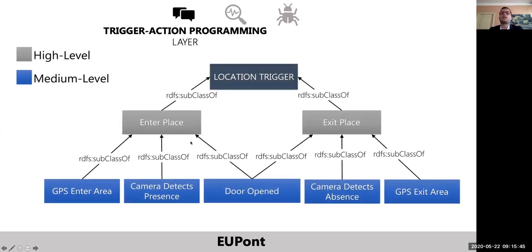Rules in EUPont can be defined at two different levels of abstraction: high and medium. The graph shows some location triggers. High-level triggers are generic events to be verified, like entering a place, and they don't include any technical detail nor the connected entity to be used — these events could potentially be monitored in different ways, through a camera, the smartphone, GPS, and so on. Medium-level triggers do not include technical details such as brands or manufacturers, but they specify a generic connected entity to be used, such as cameras and doors.